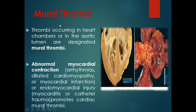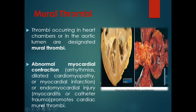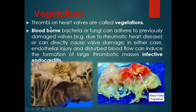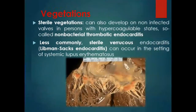Mural thrombi are thrombi that occur in heart chambers or the aortic lumen. They can be caused by abnormal myocardial contraction such as in arrhythmia, dilated cardiomyopathy, or myocardial injury, or by endomyocardial injury — injury to the endomyocardial layer — and myocarditis (inflammation of the heart). Thrombi present on heart valves are called vegetations. These can be infection-related with superimposition of bacteria, or sterile vegetations — non-bacterial thrombotic endocarditis.